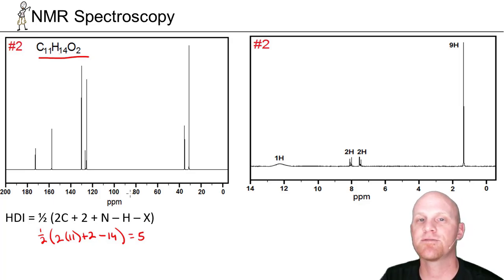So in this case, we've got 5 degrees of unsaturation. That's quite a few, so it's a combination of 5 pi bonds plus rings. In this case, one quick way to get 4 degrees of unsaturation in a hurry is to simply have a benzene ring, 3 pi bonds and a ring.